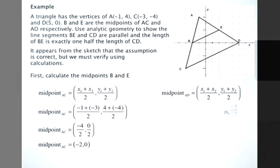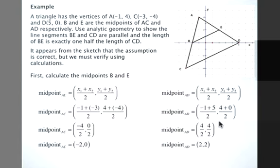The midpoint of AD: negative 1 plus 5 divided by 2, and 4 plus 0 divided by 2. We get 4 over 2 and 4 over 2. So the midpoint of AD, which is our point E, is at 2, 2.